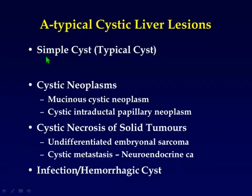Simple cyst is typical — as you see, we see typical cysts every day. Atypical cysts include three categories: cystic neoplasm, cystic necrosis of solid tumor, and inflammation looking like a cyst.